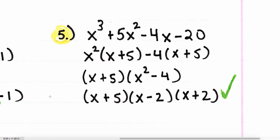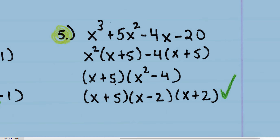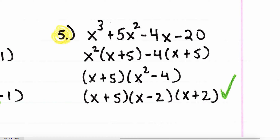Now factor x cubed plus 5x squared minus 4x minus 20. Look at the first two terms — the GCF is x squared, so I pull out x squared, leaving x plus five. Then I pull out a negative four from the last two terms, giving negative four times x plus five. Now x plus five is the common factor, so I factor it to the front: x plus five times x squared minus four. That's the difference of squares, which factors into x minus two times x plus two. Since none of the factors repeat, that's the final answer.